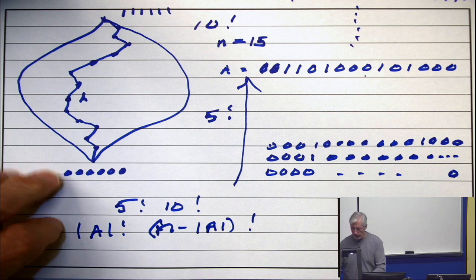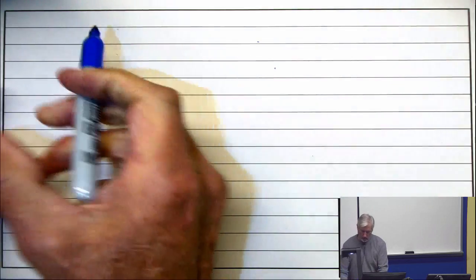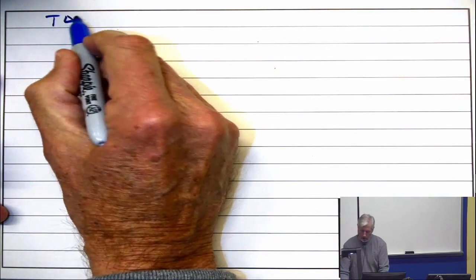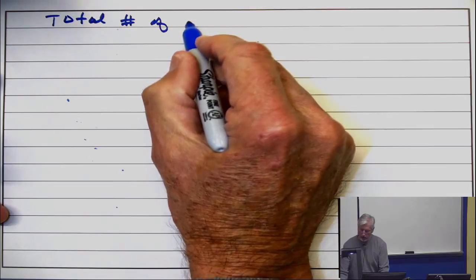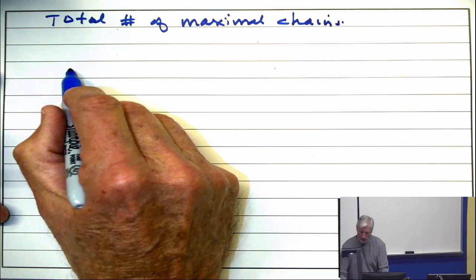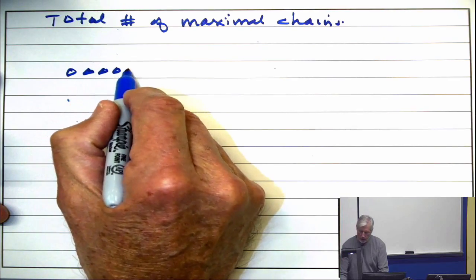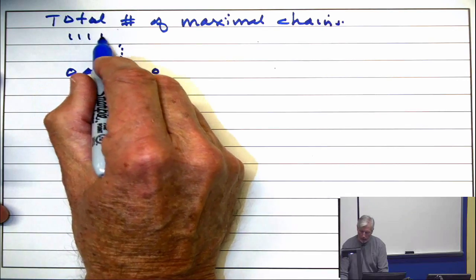Okay? That's the first detail. What's the second detail? What's the total number of maximal chains? In other words, how many ways to start with all zeros and go on up all the way to all ones?